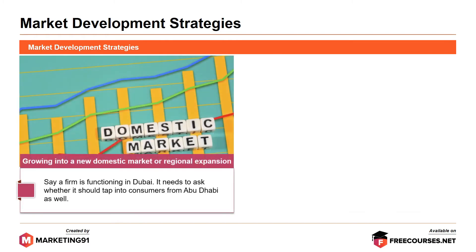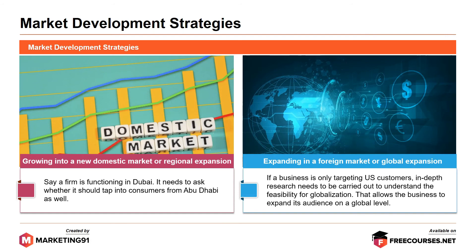Next, growing into a domestic market or regional expansion. For example, if a firm is functioning in Dubai, it needs to ask whether it should tap into consumers from Abu Dhabi as well. Next, expanding into a foreign market or global expansion. If a business is only targeting US customers, in-depth research needs to be carried out to understand the feasibility for globalization, which allows the business to expand its audience on a global level.